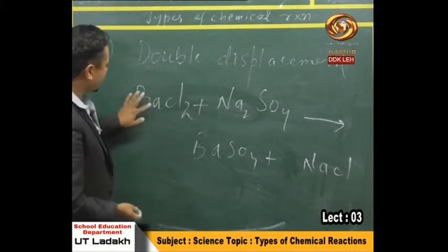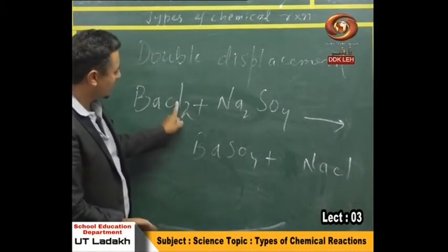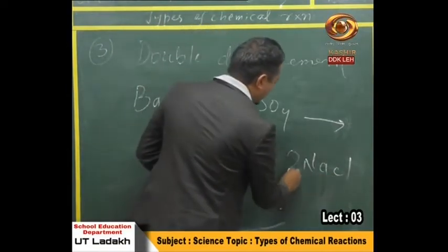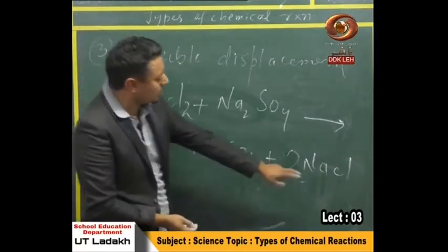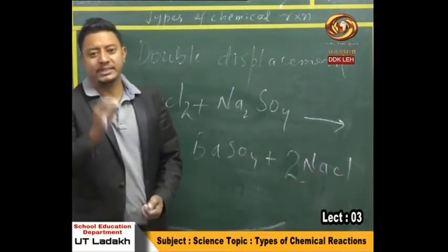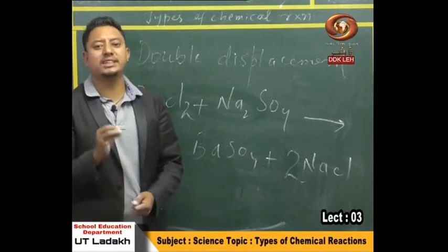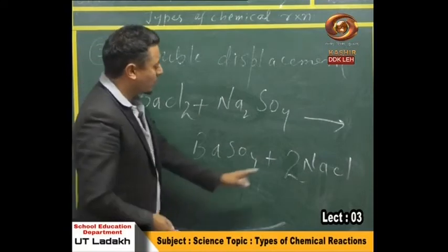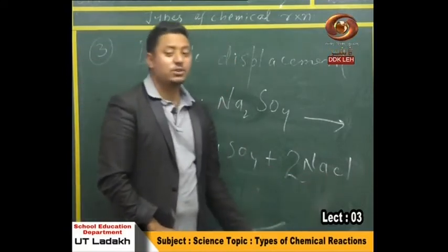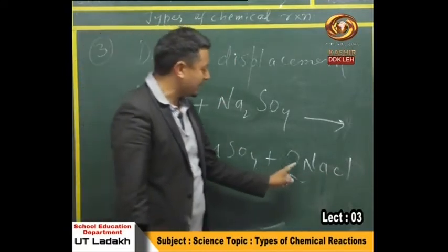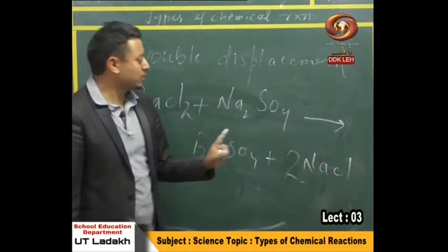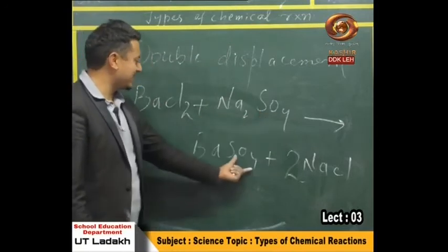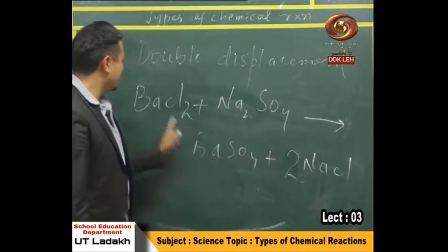Let's check the balancing: one barium here, one barium there — fine. Two chlorine on the left, but only one chlorine on the right, so we add a coefficient of 2 to sodium chloride. With two sodium chloride, we now have 2 sodium on the right, so we put 2 sodium sulfate on the left. Checking: barium balanced, 2 chlorine balanced, sulfate balanced, oxygen balanced. This is now a balanced chemical equation.